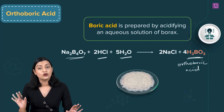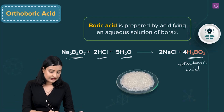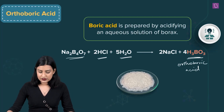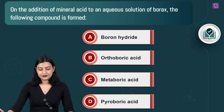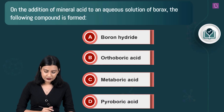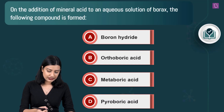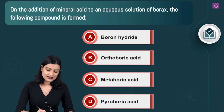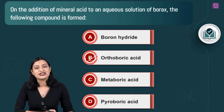The equation shows borax reacting with HCl and water to give H₃BO₃ (orthoboric acid), which crystallizes out of solution upon cooling, and NaCl which remains in solution. So option B, orthoboric acid, is the correct answer.